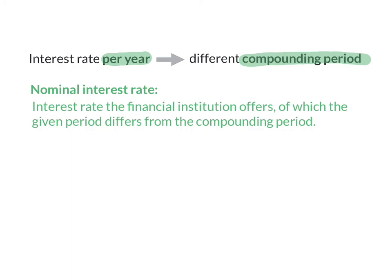The nominal interest rate is the interest rate that the bank offers you. When interest is compounded more than once a year, the actual interest rate accumulated during that year is more than the annual interest rate given, due to the effect of compound interest.